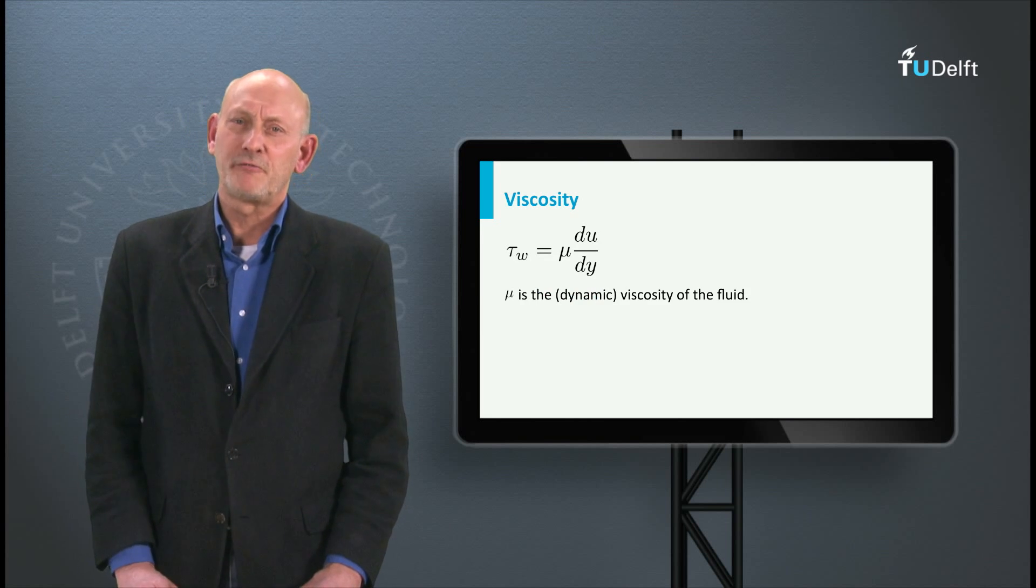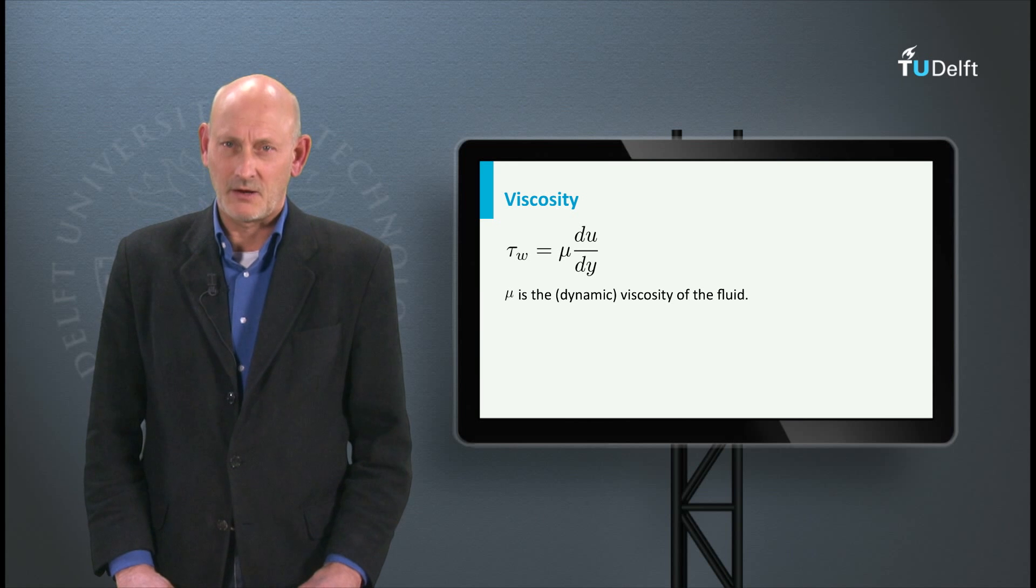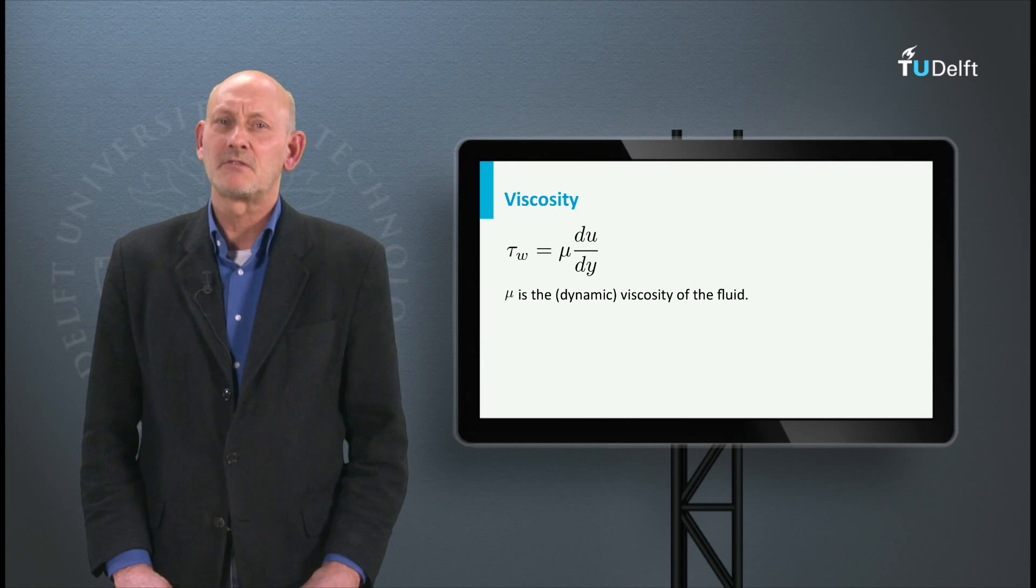Isaac Newton already formulated an equation for the shear stress. The shear stress tau is mu times the velocity gradient, where mu is the dynamic viscosity coefficient, or in short, viscosity.